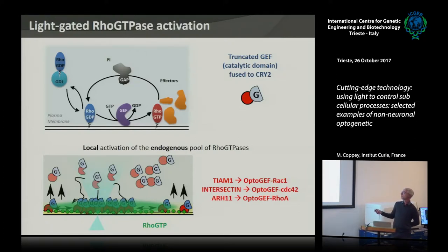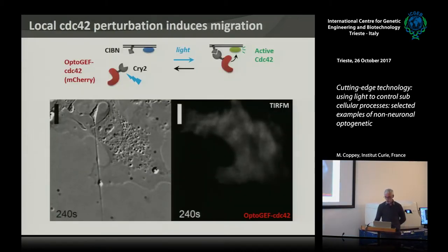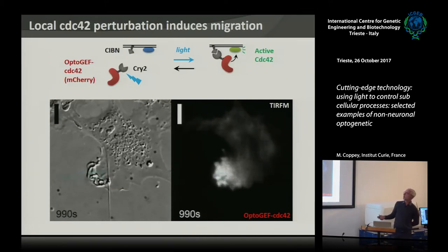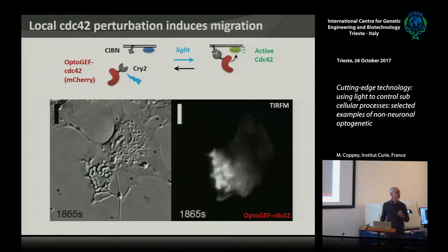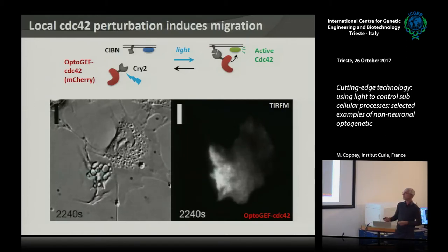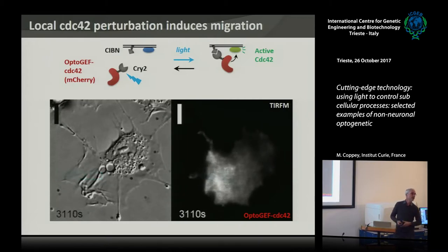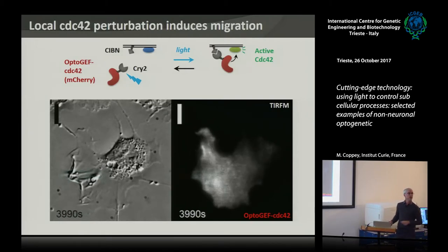The GTPases — there are three canonical ones very important for cell polarity, cell morphology, and morphodynamics controlling the cytoskeleton: RAC1, CDC42 (which we saw an example of this morning), and RhoA (mainly responsible for contractility). Here are two movies. The first activates CDC42 locally: you have a cell, activate in a small region, and you can look in TIRF to see the recruitment — the biochemical signal you're sending to the cell — and you see the cell responds by polarizing and migrating in the direction of activation. You can remotely control cell migration by localizing CDC42 activity.